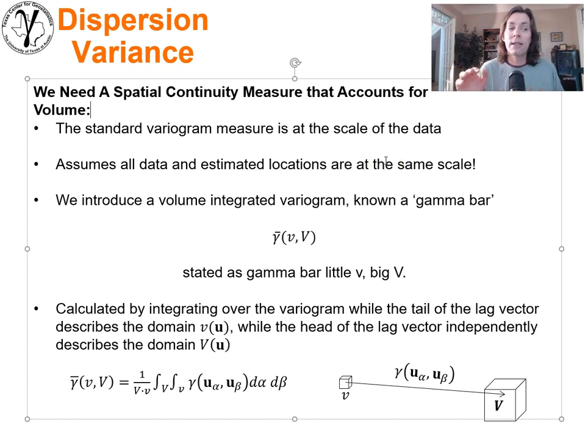It assumes all the data, all the estimated locations, all have the same scale. We introduce the volume integrated variogram known as the gamma bar as a methodology to directly account for spatial continuity while explicitly accounting for the scale.